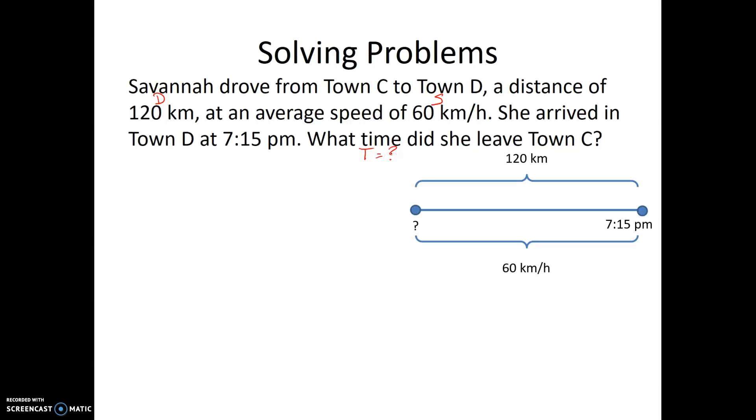We're going to use the time formula, so time equals distance over speed, which is 120 kilometers over 60 kilometers per hour. We can cross cancel zeros and cross cancel the kilometers, and we're left with a number in hours: 12 divided by 6 is 2 hours. Now we're not done because the question is what time did she leave town C, so we need to subtract two hours from 7:15 p.m., and we're going to get 5:15 p.m.